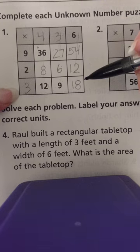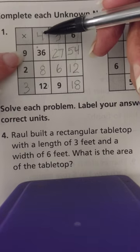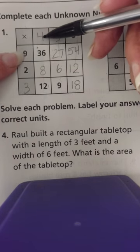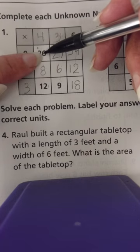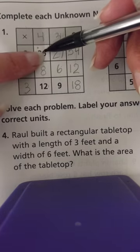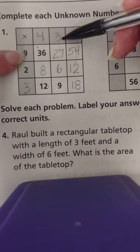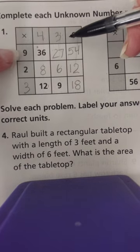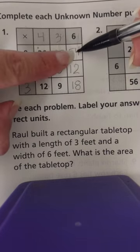Every time, all that you're doing is multiplying two factors to get to a product. Nine times four is thirty-six. Nine times three is twenty-seven. Nine times six is fifty-four. Two times four is eight. Two times three is six. Two times six is twelve.